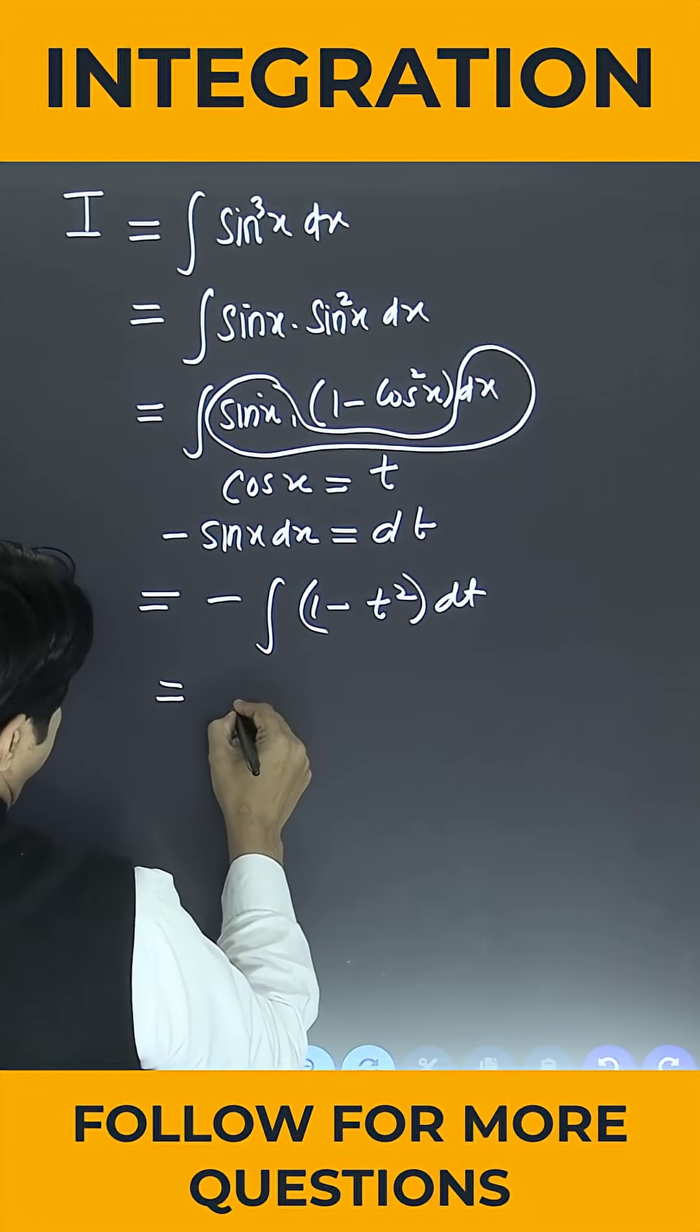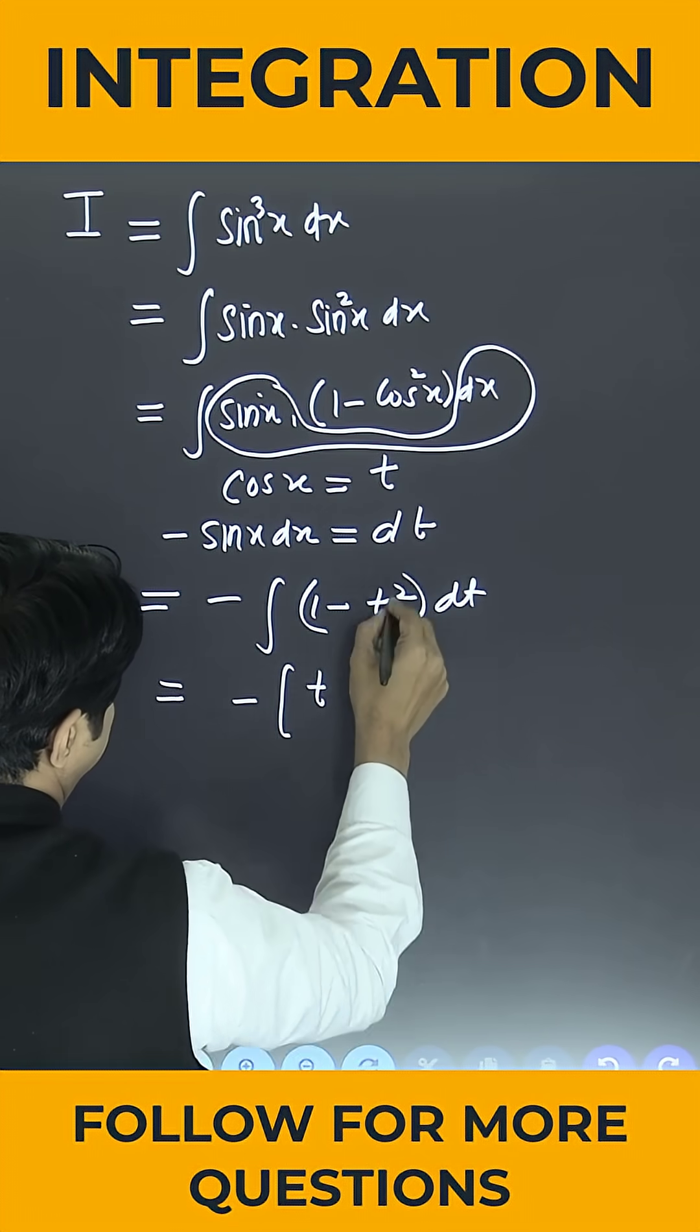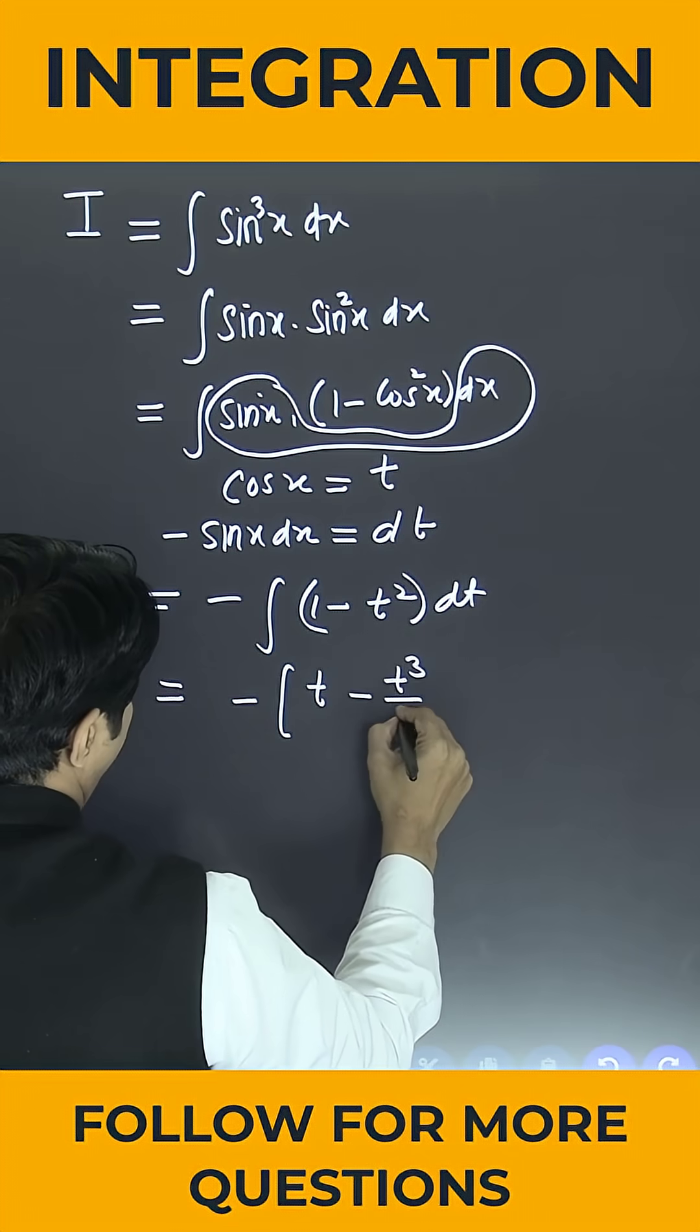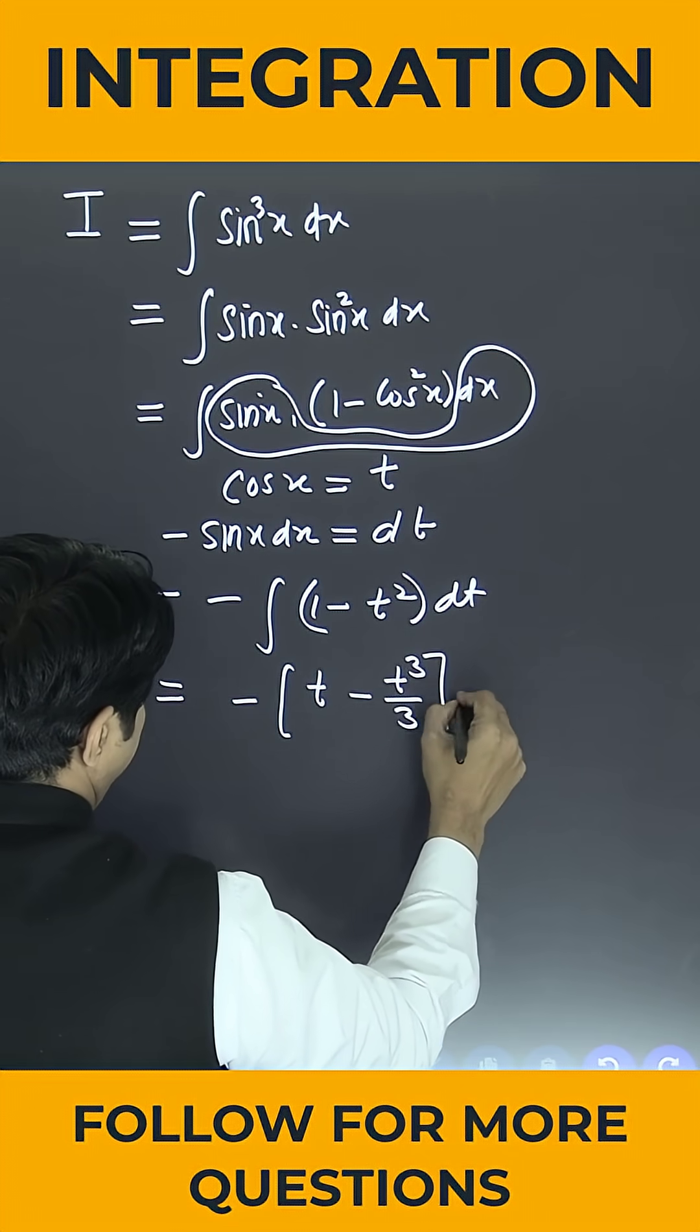So this is nothing but minus is outside. One integration is t minus this is nothing but t to the power 3 by 3 plus c.